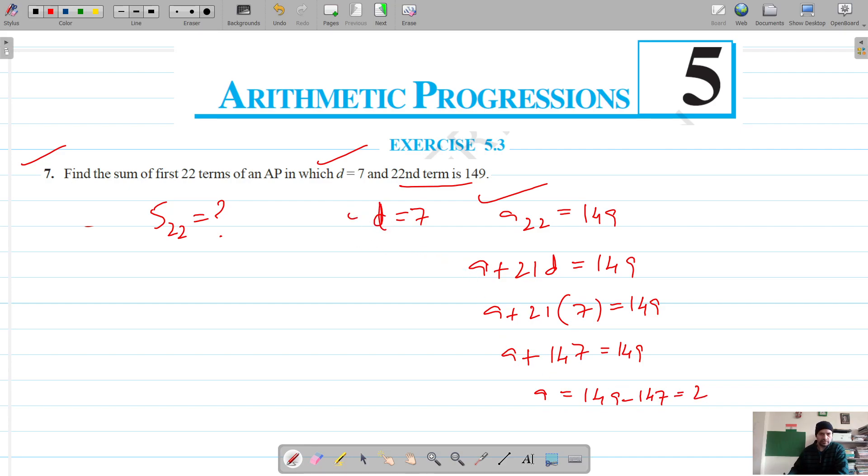So A is 2, D is 7. Now the sum of 22 terms is N by 2, that is 22 by 2, into [2A plus (N minus 1) into D], which gives us 11 into [2 into 2 plus (22 minus 1) into 7], which is 11 into [4 plus 21 into 7].